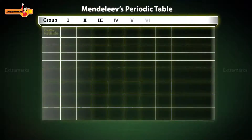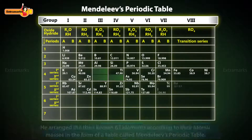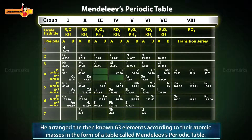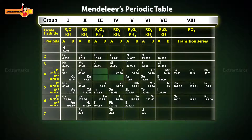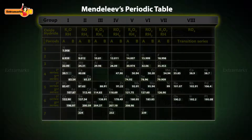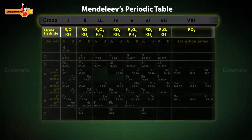At that time only 63 elements were known. Mendeleev arranged them in the order of increasing atomic masses in the form of a table, known as Mendeleev's periodic table. In his periodic table, he related the atomic masses of the elements with their physical and chemical properties. His main focus was on the oxides and hydrides formed by the elements.